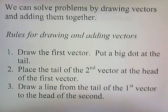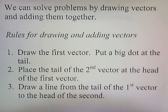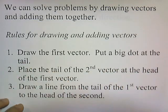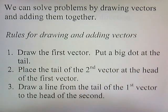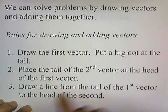We can solve problems by drawing vectors and adding them together. Here are the rules: first, draw the first vector and put a big dot at its tail. Then place the tail of the second vector at the head of the first vector. Finally, draw a line from the tail of the first vector to the head of the second. Let's do a problem that illustrates these three rules.